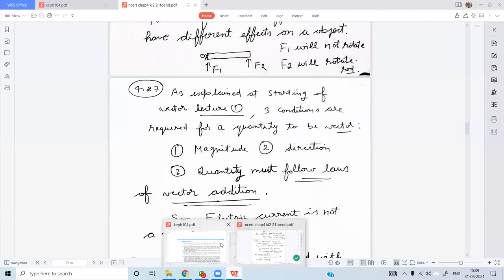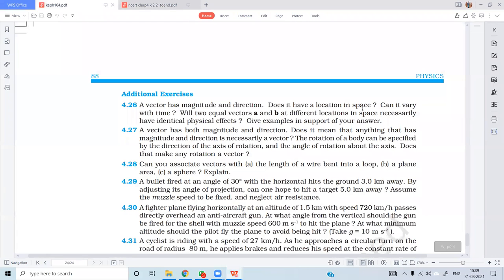Problem 4.27: Does having magnitude and direction mean that anything with magnitude and direction is necessarily a vector? But this is the fact - we have explained that electric current has magnitude and direction but is not a vector.